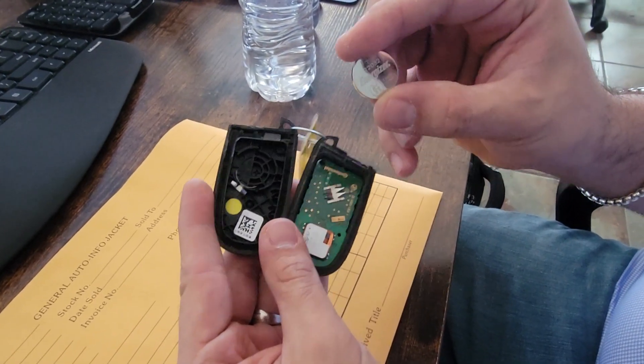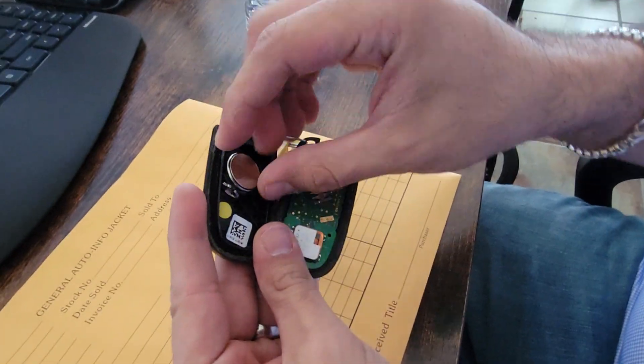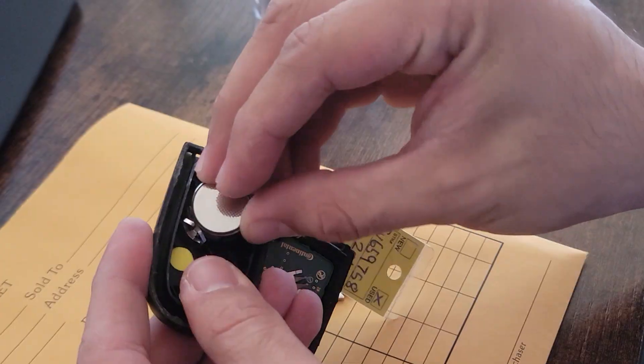It says to put the positive side down, so you're going to put the positive side like this, slide it and push it in, and then just close your key till it clicks.